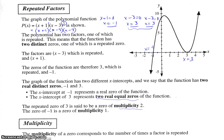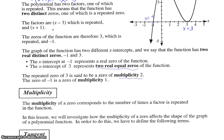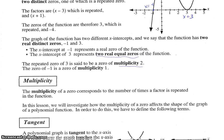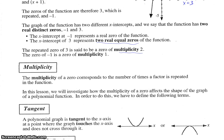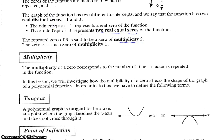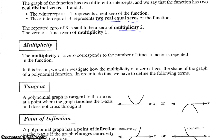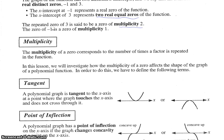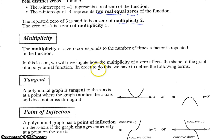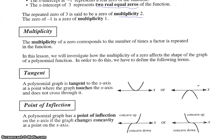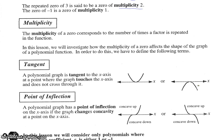This brings up the new word: multiplicity. The multiplicity of a zero corresponds to the number of times a factor is repeated in the function — hence related to the exponent on that factor when it's in nicely factored form. In this lesson, we're going to look at how the multiplicity of the zero affects the shape of the graph. To do this, we first have to define some terms: tangent and point of inflection.